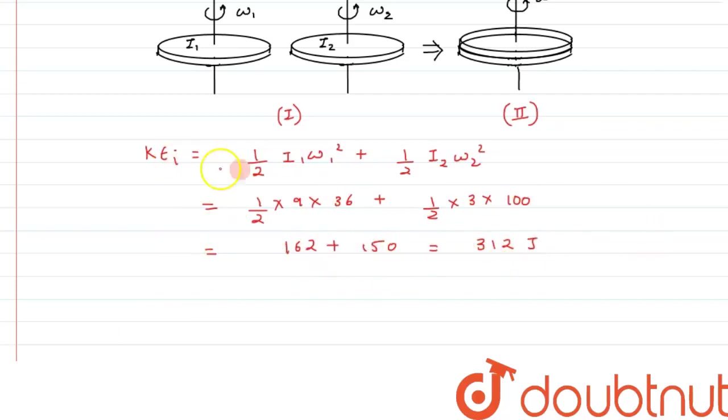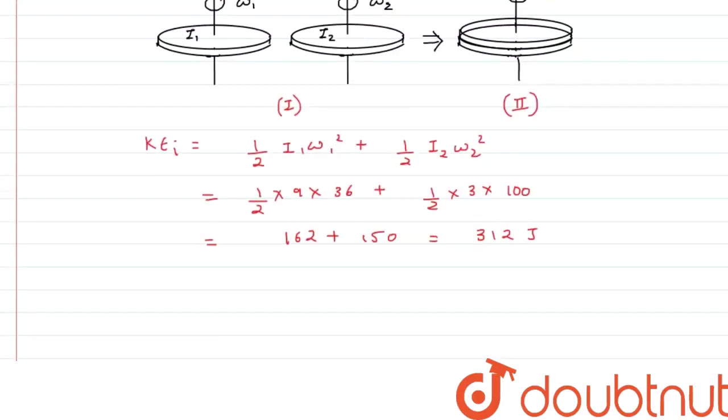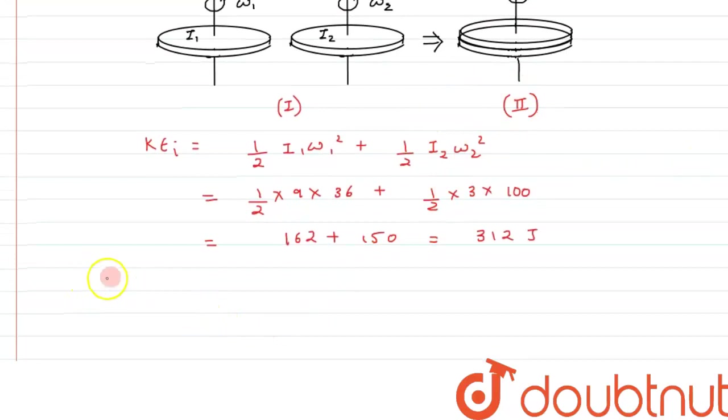Now let's move on to the second part of the question. Both the disks have been brought together and they are now moving with the same angular velocity ω. From first case to second case we can see angular momentum will be conserved as there is no external torque. So we can write by conservation of angular momentum.